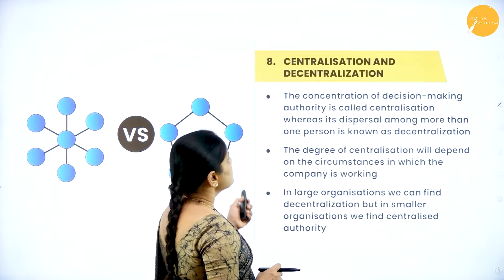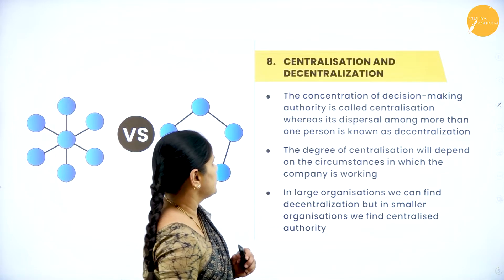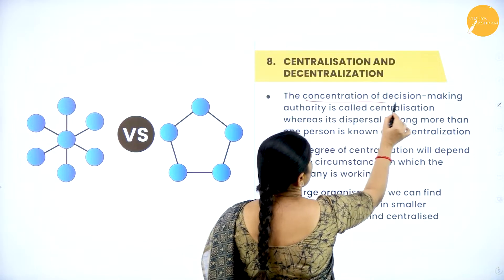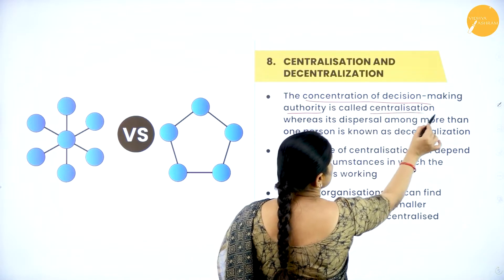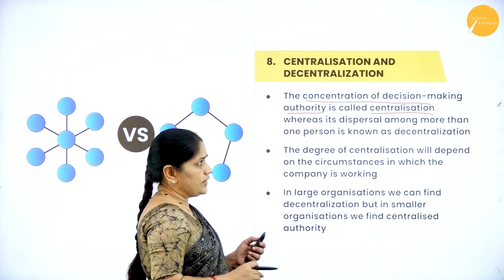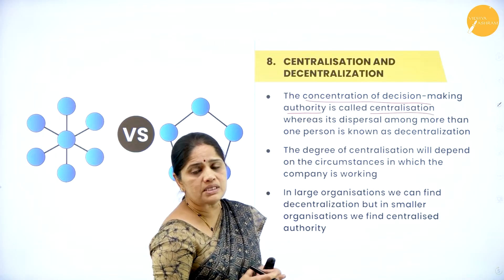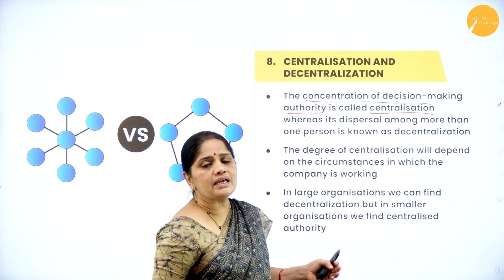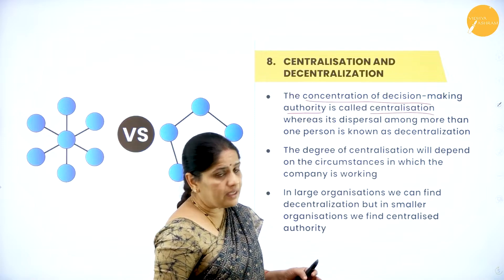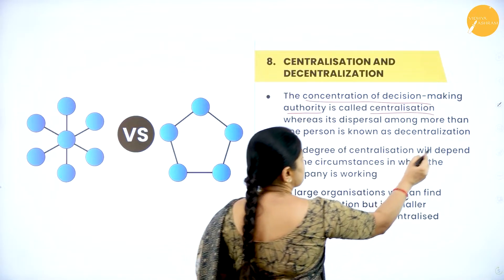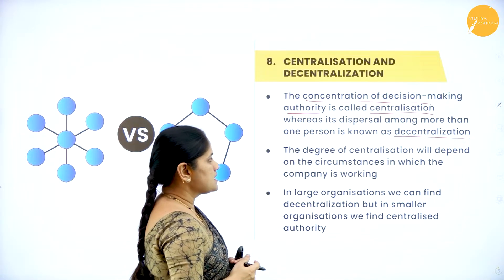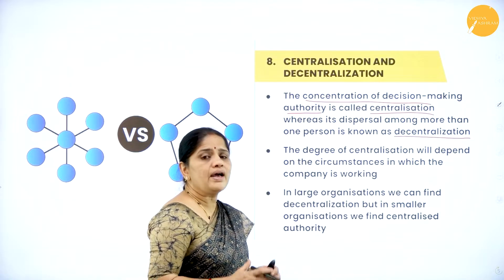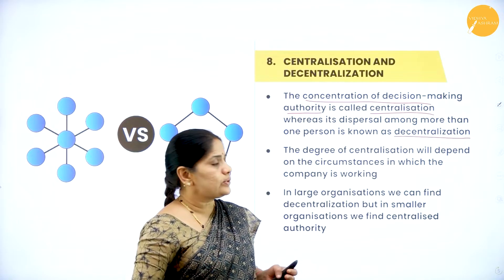The next principle is centralization and decentralization. Centralization means concentration of decision-making authority at the topmost level of management. Decentralization means giving the decision-making authority to all subordinates of the organization. We need to consider the degree of centralization — what powers top management retains for itself versus what powers it delegates to subordinates — depending on the circumstances in which the company is working.